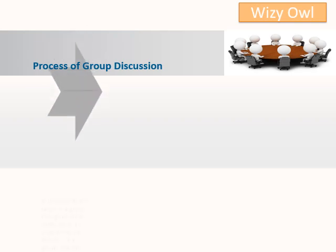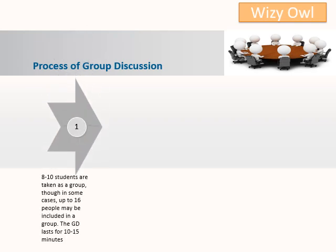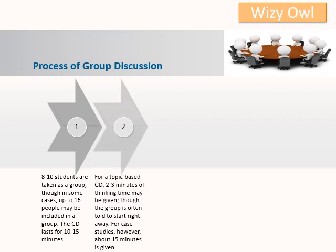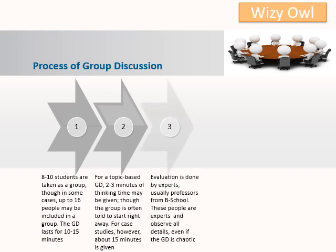Process of a group discussion: 8 to 10 students are taken as a group, though in some cases up to 16 people may be included. The GD lasts for 10 to 15 minutes. For a topic-based GD, 2 to 3 minutes of thinking may be given, though the group is often told to start right away. For case studies, however, above 15 minutes is given.